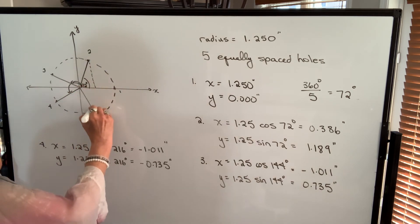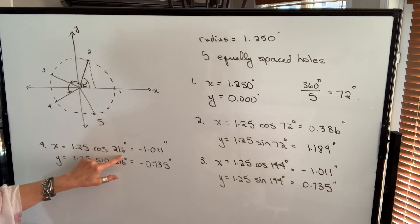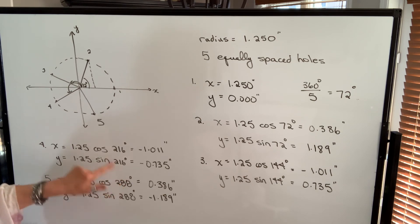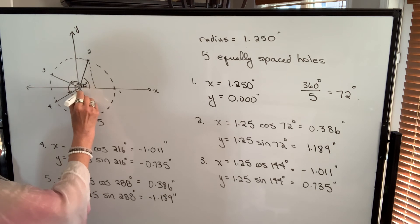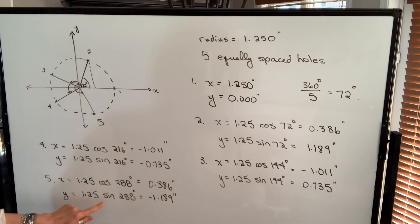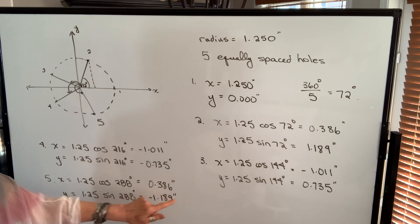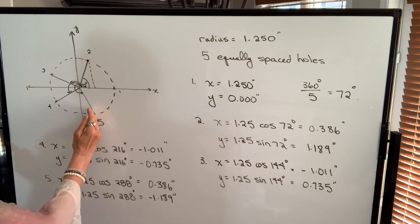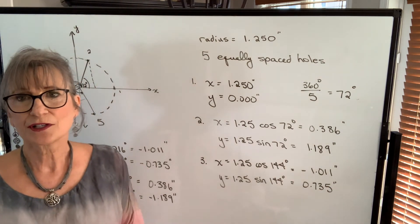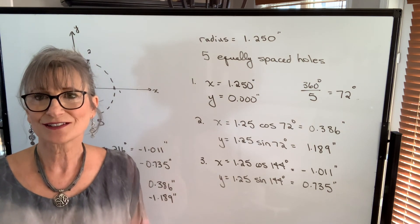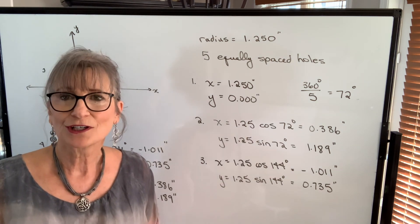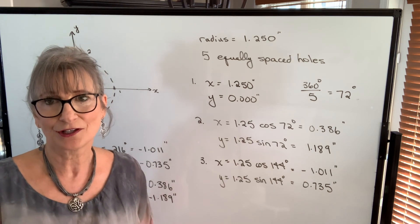For hole number five, we take 216 degrees and add 72 degrees to get 288 degrees. Plugging into the formulas, the x-coordinate is 0.386 inches and the y-coordinate is negative 1.189 inches. That makes sense because x is positive and y is negative in that quadrant. Whenever a hole is on an axis, one coordinate will be zero and the other will be either the positive or negative radius — you can use that as a shortcut, though the formula still works even when points are on an axis.